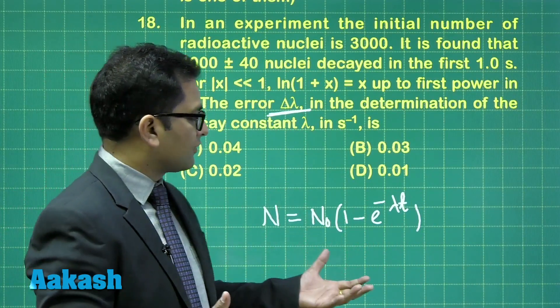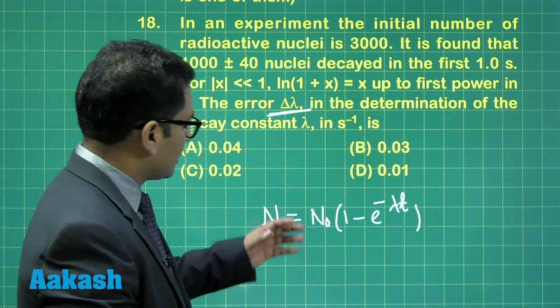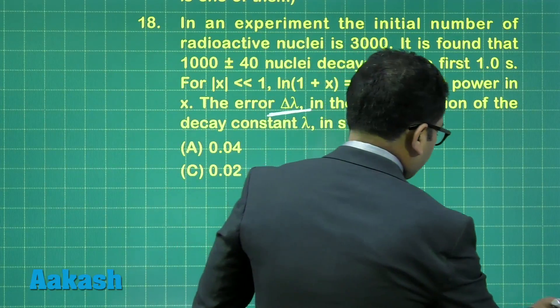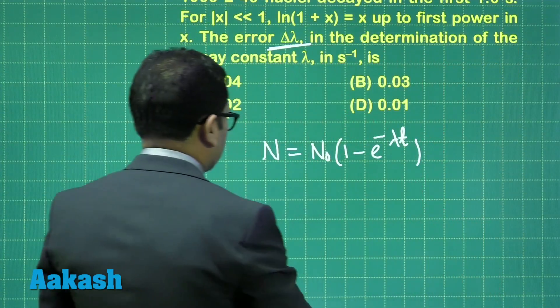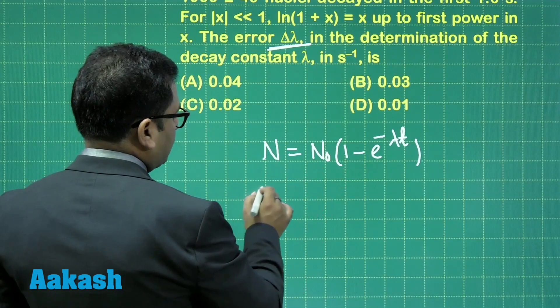N naught is the initial number of nuclei, N naught e raised to the power minus lambda t is the number of nuclei remaining, so the subtracted one, that will give me the number of nuclei which is decayed.